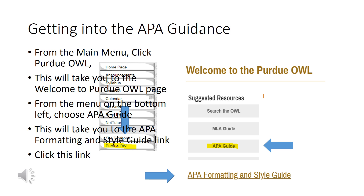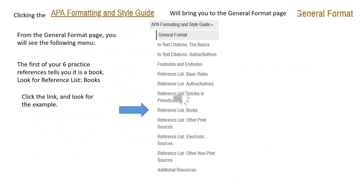You'll see the heading at the top of the next column. From there, go to the menu on the bottom left and choose APA guide — you'll see it highlighted — and that will take you to the link labeled APA Formatting and Style Guide. Click that link.